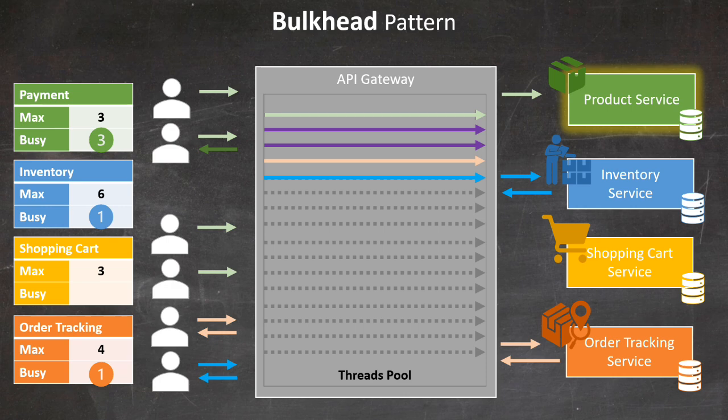This is the essence of the bulkhead pattern. By compartmentalizing resources, we prevent issues in one service from consuming all available resources and affecting the entire system. It's like the watertight compartments in a ship — damage to one compartment doesn't sink the whole vessel. This approach significantly enhances the resilience and stability of our microservices architecture.